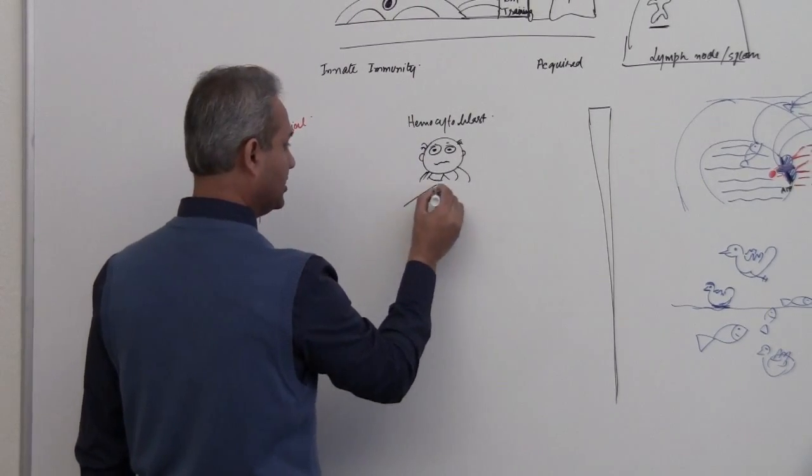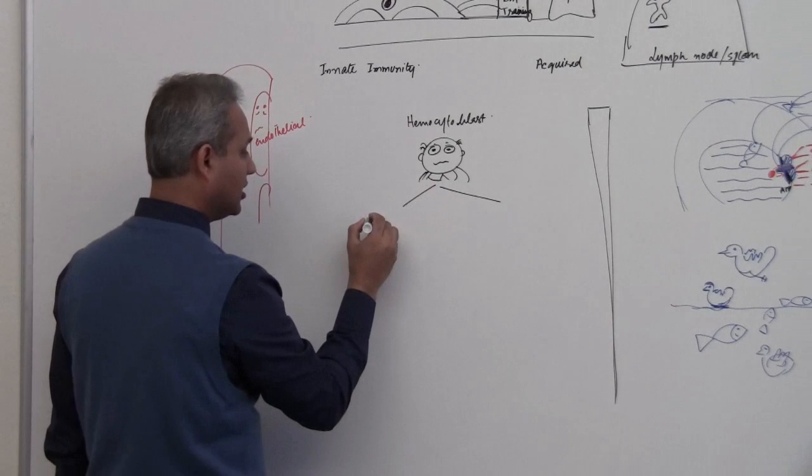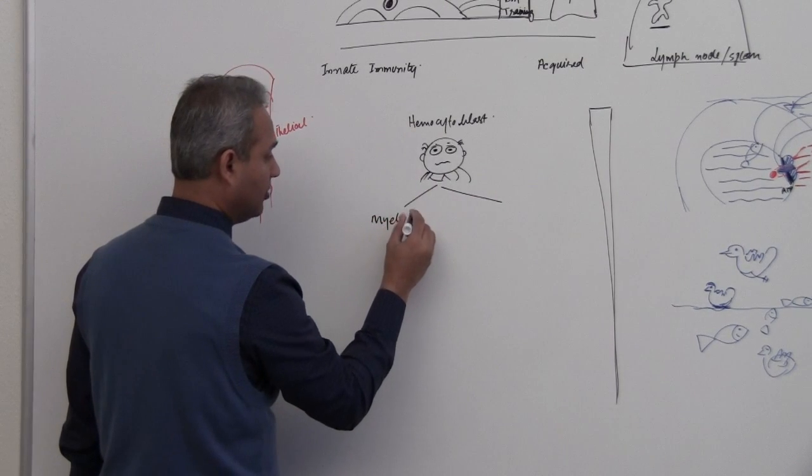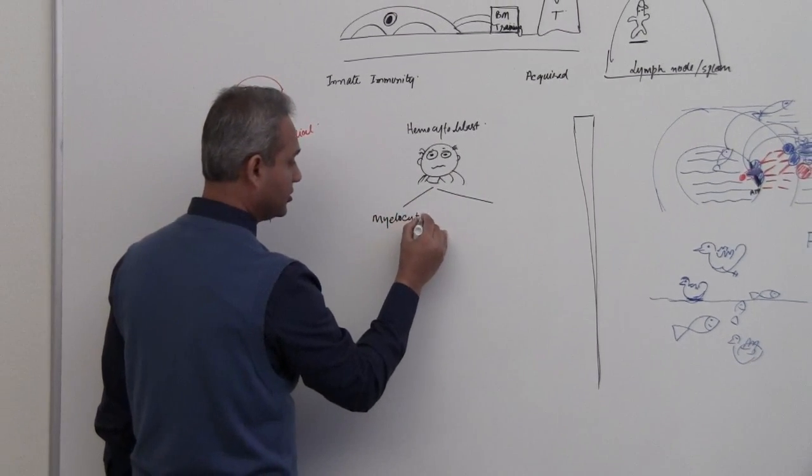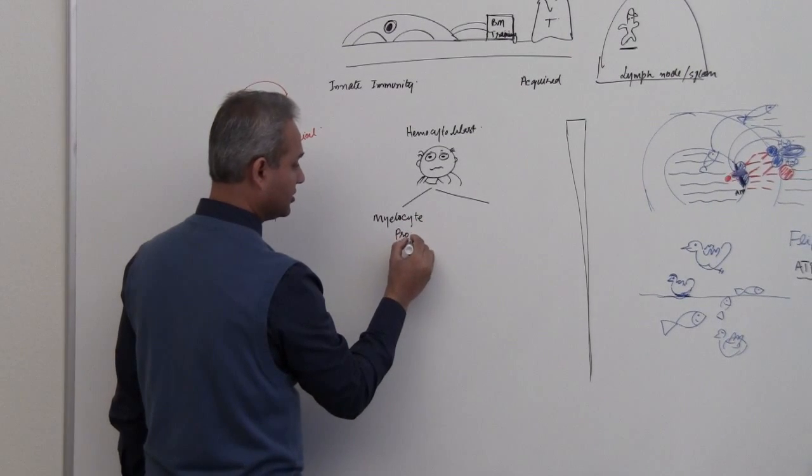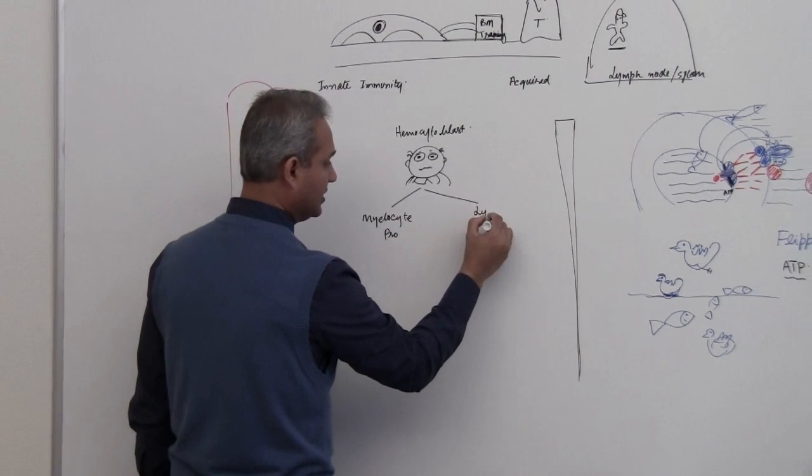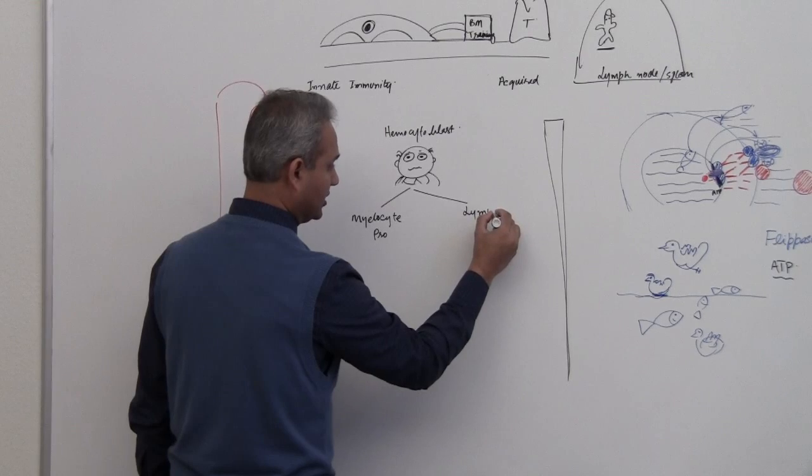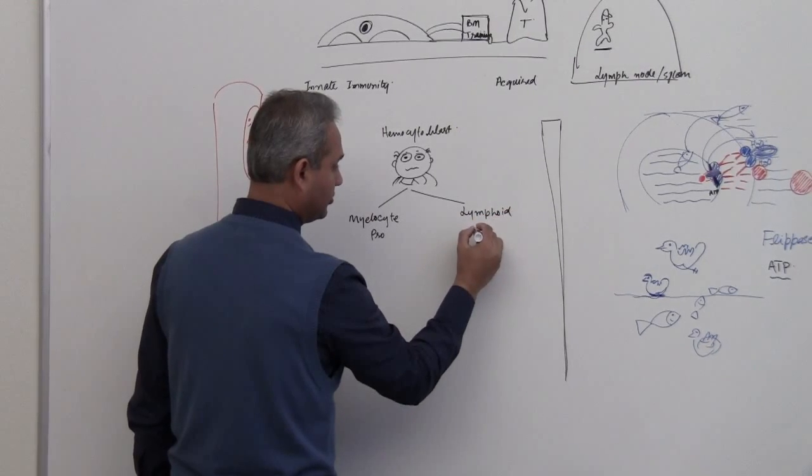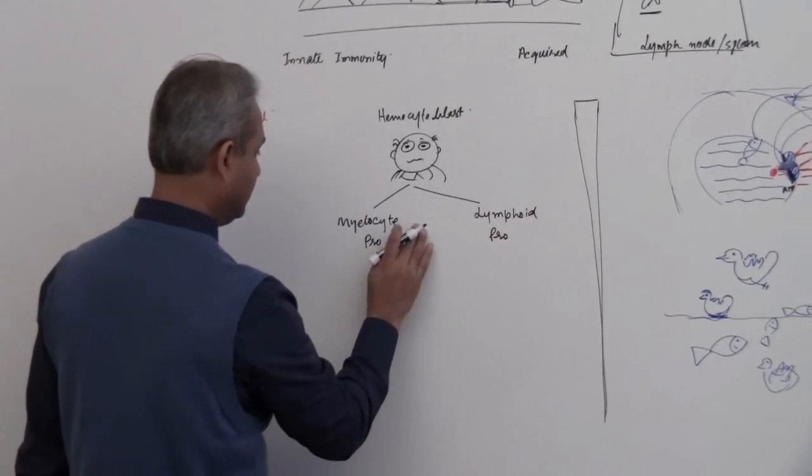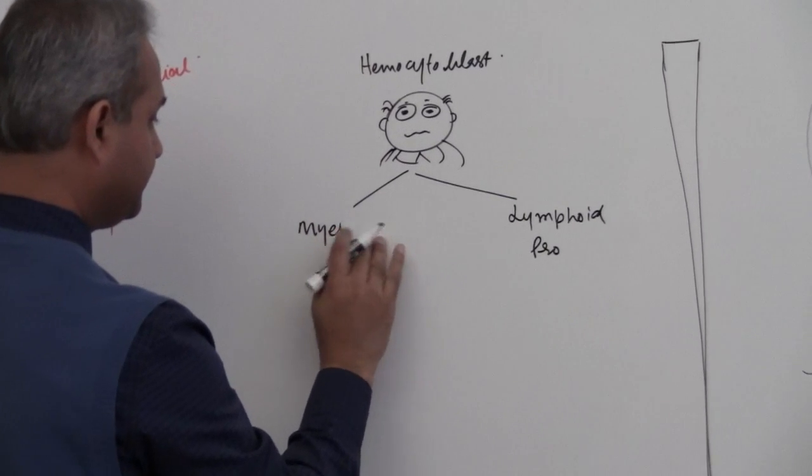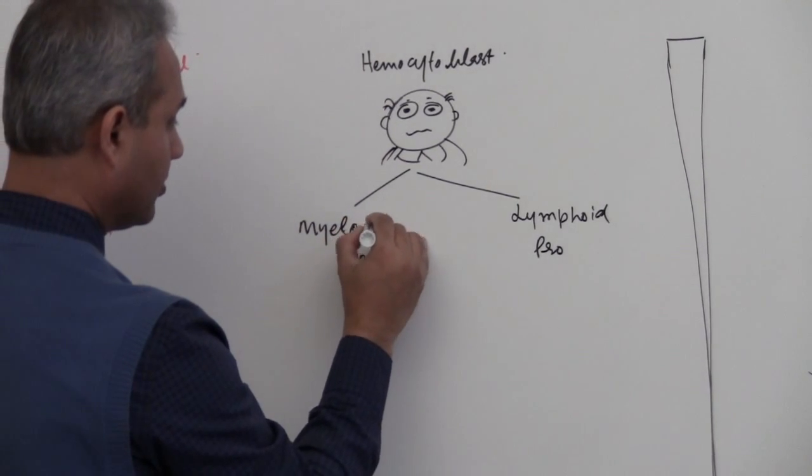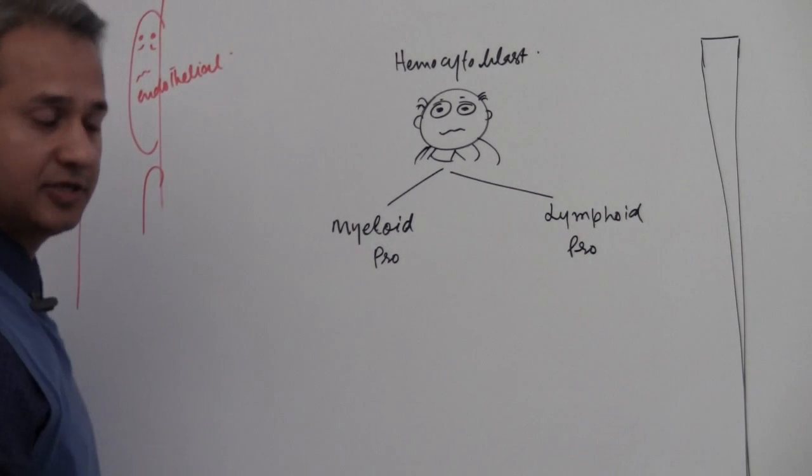From the hemocytoblast, as we just talked, would come the myeloid progenitor and the lymphoid or lymphocyte progenitor.